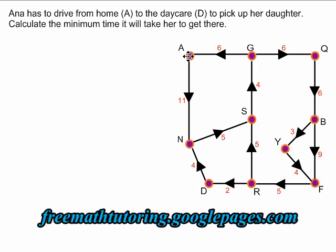Anna has no choice but to start by heading towards vertex N, which will take her 11 minutes. At that point, she's very close to the daycare, but she can't go directly there along this street because it goes in the wrong direction. She again has no choice but to follow the line from N to S — five more minutes.